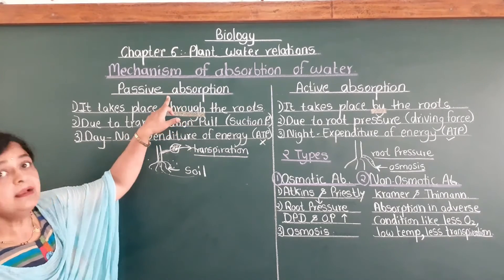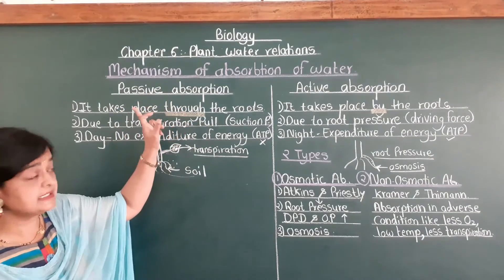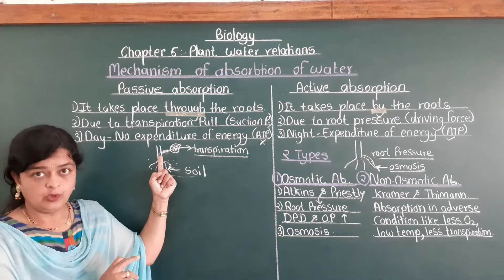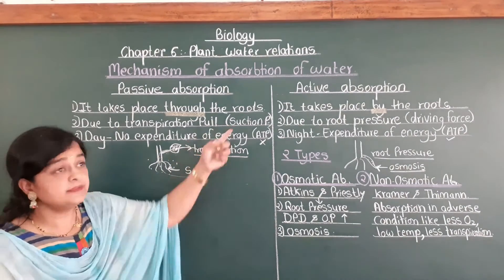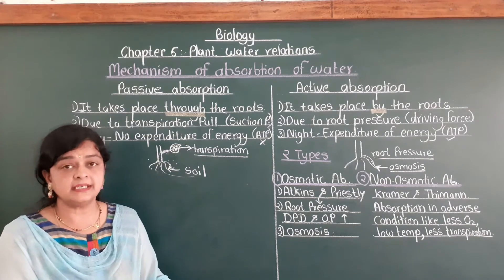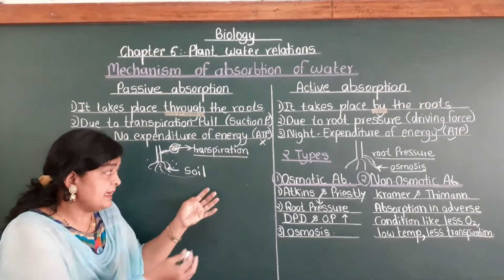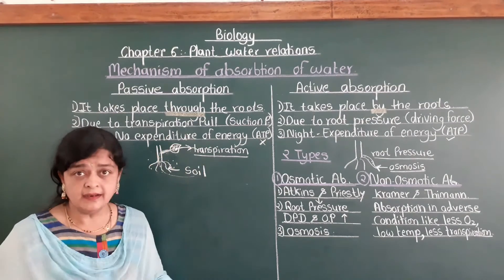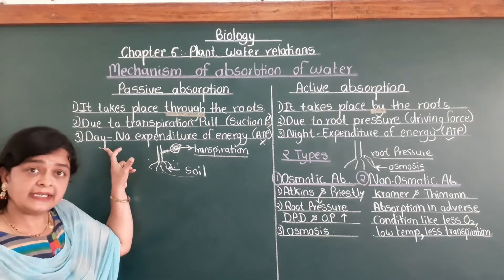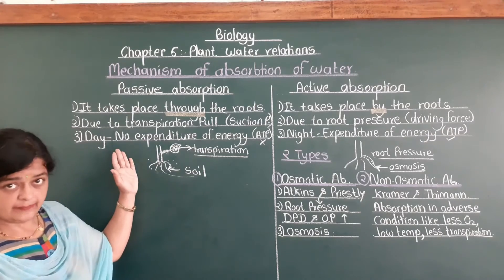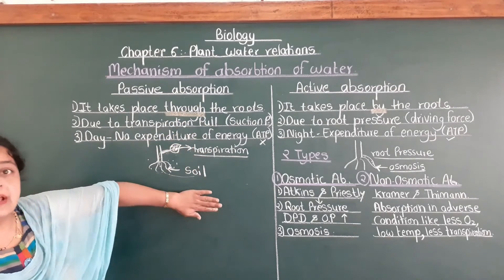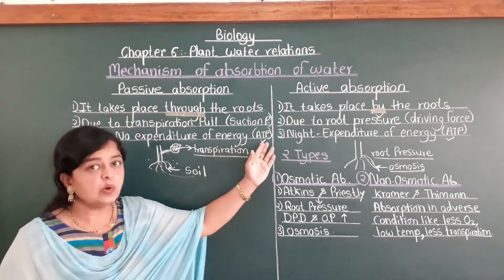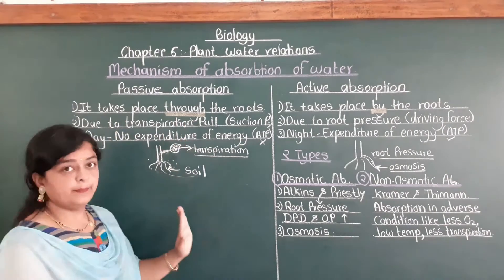To summarize passive absorption: the absorption is done through the roots and not by the roots. The transpiration pull or suction pressure develops, causing the absorption. No extra expenditure of energy is done — no ATP is utilized. Water is simply transferred from soil to root to stem to leaf, and from the leaf it is transpirated. Plants mainly utilize this method because it is the easiest.